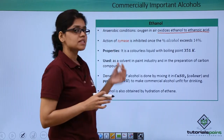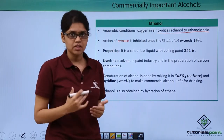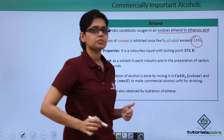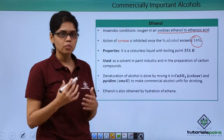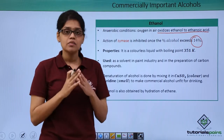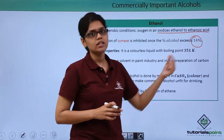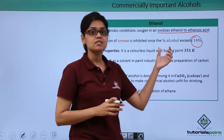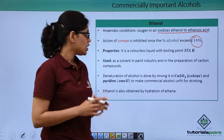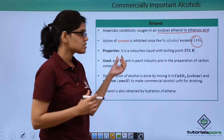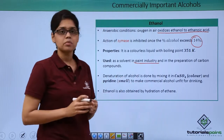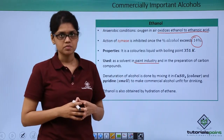Note that the action of zymase is inhibited when the percentage of alcohol exceeds 14%. The property of ethanol is that it is again a colorless liquid with a boiling point of 351 Kelvin, which is higher than that of methanol. It is used as a solvent in the paint industry and in the preparation of several carbon compounds.